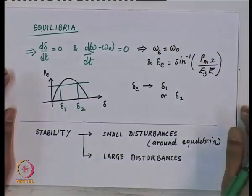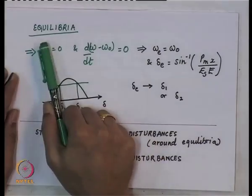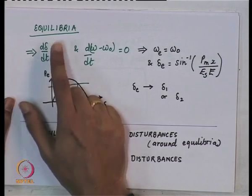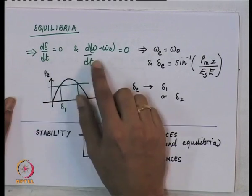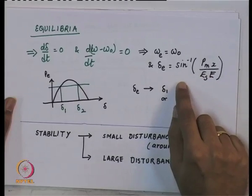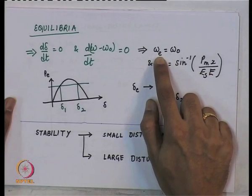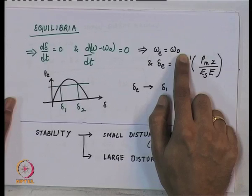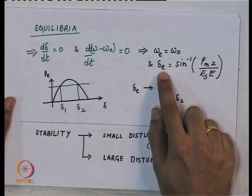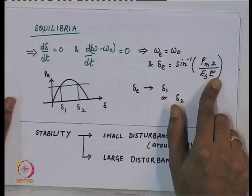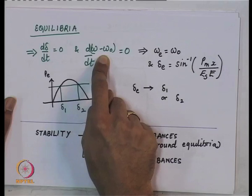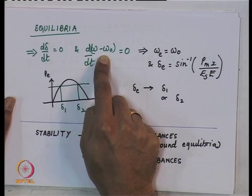The first step was finding the equilibria of the system. An equilibrium is defined as the point or the values of the states for which the derivatives of the states become zero, and that yielded two equilibrium points. Both have omega_e equal to omega. Delta_e was sin-inverse of a certain quantity — this value of delta_e results in the derivative becoming equal to zero.